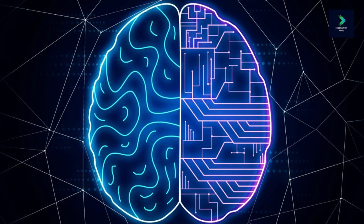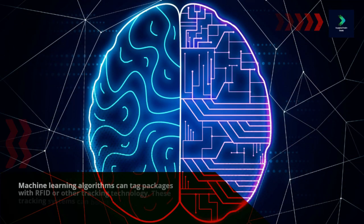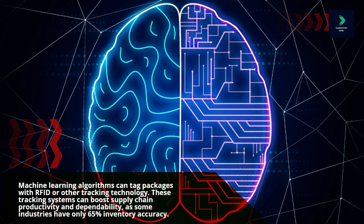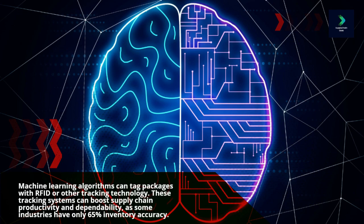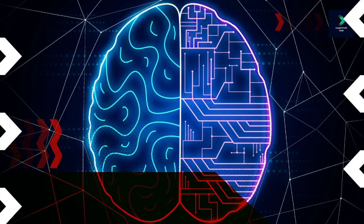Machine learning algorithms can tag packages with RFID or other tracking technology. These tracking systems can boost supply chain productivity and dependability, as some industries have only 65% inventory accuracy.